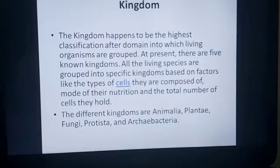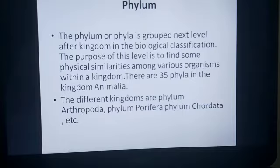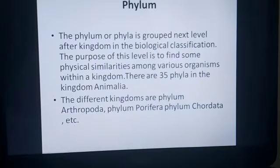The next level is phylum, or phyla. It is the group next after kingdom in biological classification. The purpose of this level is to find physical similarities among various organisms within a kingdom. For example, in the animal kingdom there are 35 phyla present. Different phyla include Arthropoda, Porifera, and Caudata — all examples you have studied in lower classes.